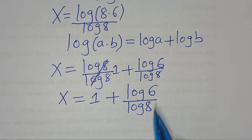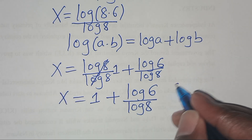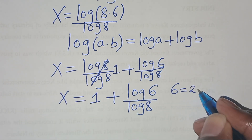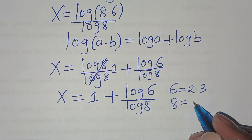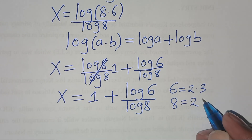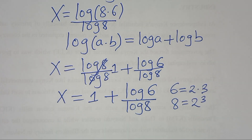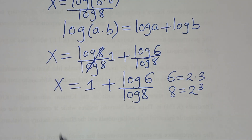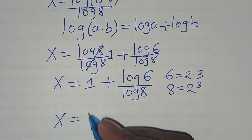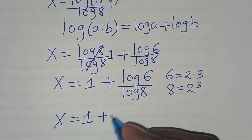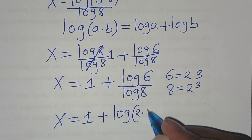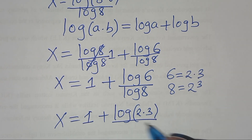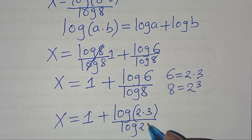From here, we can express 6 as 2 times 3, and we can express 8 as 2 to power 3. So here we have x is equal to 1 plus ln(2 × 3), divided by ln(2^3).